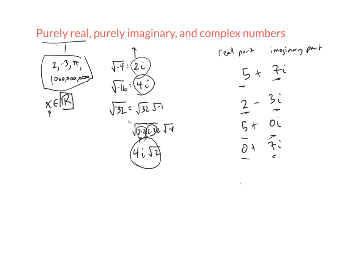So any number that can be written as a plus bi, where a and b are numbers, is a complex number. Now, you may look at this and go, how are these single numbers? These are two things just being added or subtracted from each other.